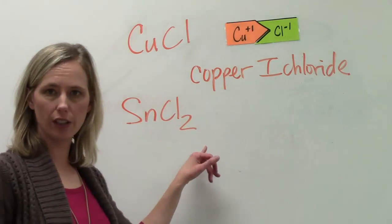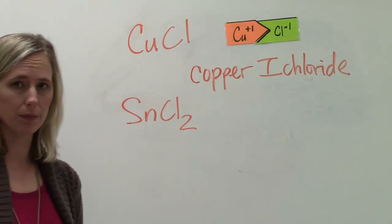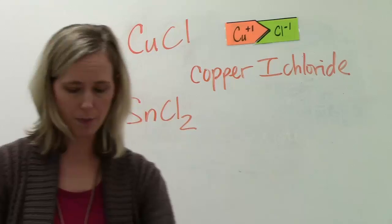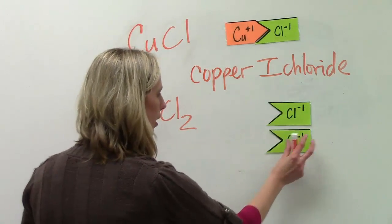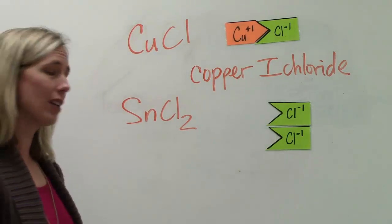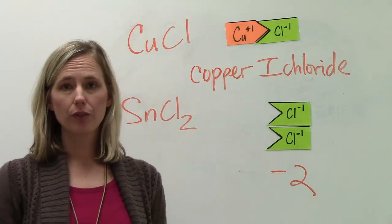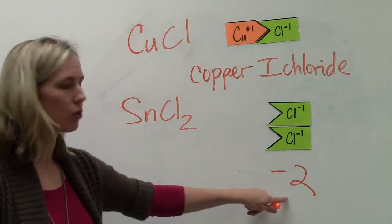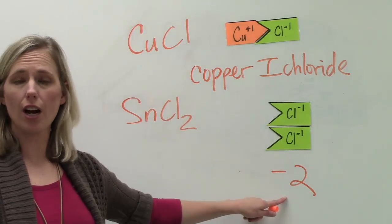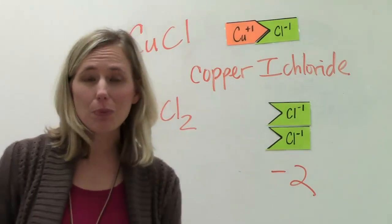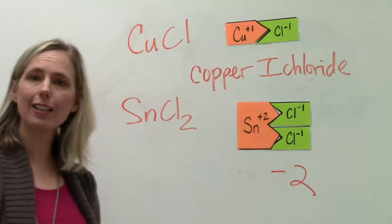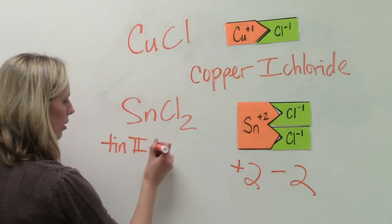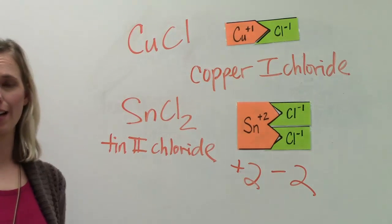What if I gave you SnCl₂? Tin is a metal that can do more than one possible charge. Let's use the formula to figure out the charge on Sn. The formula shows two chloride ions — Cl with a minus one and Cl with a minus one — adding up to a negative two. There's only one tin ion and it's got to absorb that negative two, so the tin has to be a positive two. That means the name of our compound is tin two chloride.